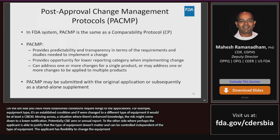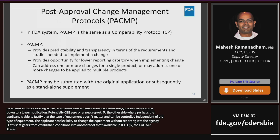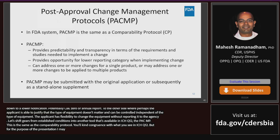Let's shift gears into another tool available in ICH Q12 — the Post-Approval Change Management Protocol, or PACMP. In the U.S. system, PACMP is the same as a Comparability Protocol. Please look at our current guidance on comparability protocols and you'll find extreme congruence with the content in ICH Q12. I might use PACMP and CP interchangeably — I'm talking about the same thing.